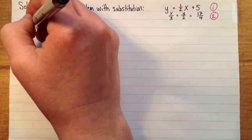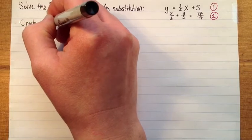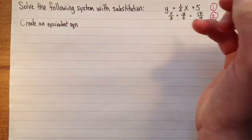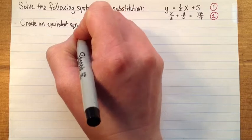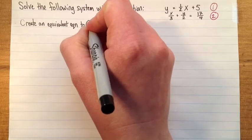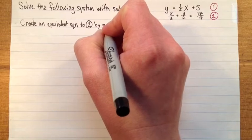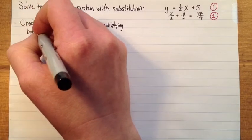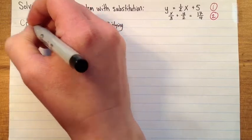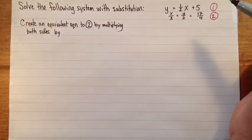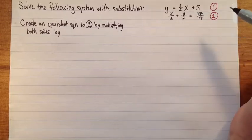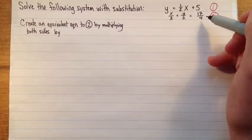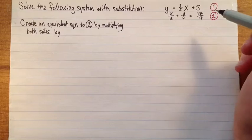So here's how we do it. Create an equivalent equation to two by multiplying both sides. So what we're going to do is multiply both sides by the lowest common denominator of all the denominators. Because if we do that, all the fractions will go away. So two, three, and four as denominators. So the lowest common multiple of those numbers is going to be twelve.